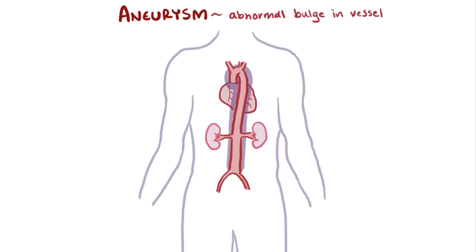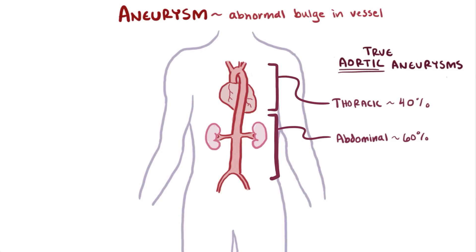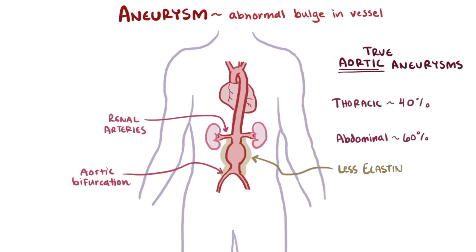Arterial aneurysms occur most commonly in the aorta, with about 60% of true aortic aneurysms happening in the abdominal section of the aorta, and about 40% happening in the thoracic section. Of all the abdominal aortic aneurysms, about 95% are found just below the point where the renal arteries branch off from the abdominal aorta, but above the aortic bifurcation. That's because there is naturally less elastin in the walls of this part of the aorta than the rest of the aorta.